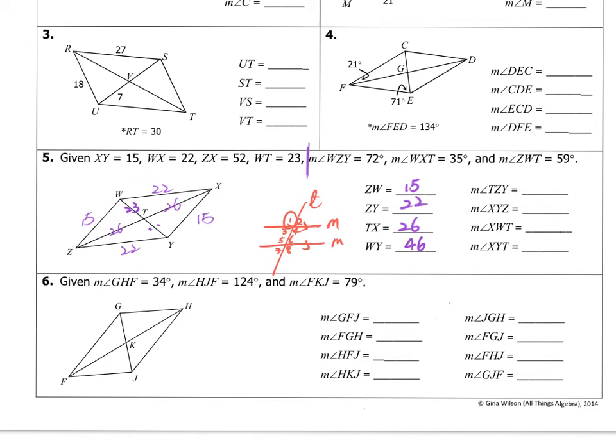So if you find this challenging go back and review chapter three or come and see me and Mr. G for a tutorial on that. So let's see. I have WZY, so this whole angle is 72 degrees. I have WXT, which is half of this at 35 degrees.